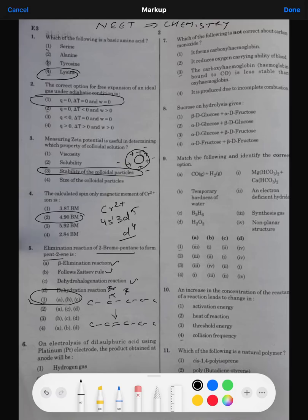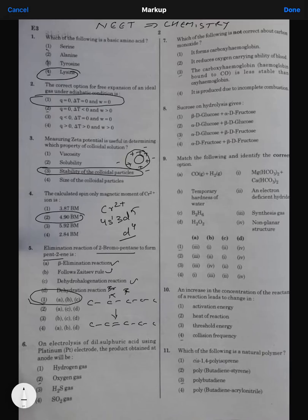Question number six: on electrolysis of dilute sulfuric acid with platinum electrode, which is anode? Of course, anode. Which is anode product? Hydrogen and oxygen? Yes, oxygen will release at anode. Because in this case dilute sulfuric acid, OH water oxidizes and it will lead to the formation of O2 at anode. Second is the correct answer.